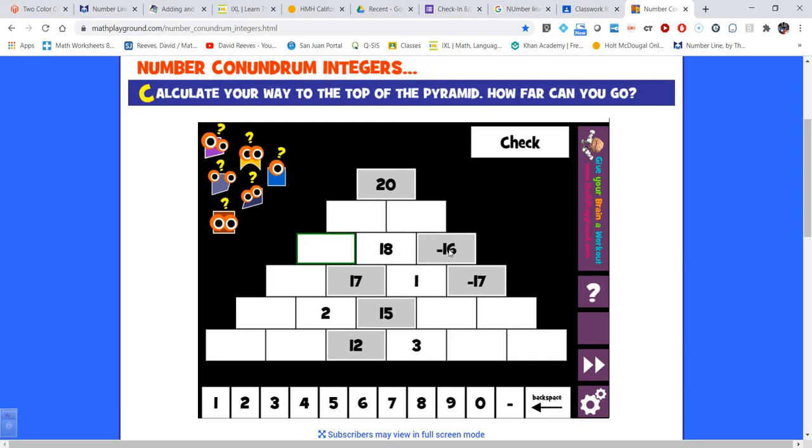How about these two? 18 plus negative 16. What do I have more of? I have more positives. How many more positives do I have? I have 2. Let's see. What do I have to add to 2 to get 20? That would be 18. And I'm gonna work my way back down. What do I add to 18 to get 18? I get 0.